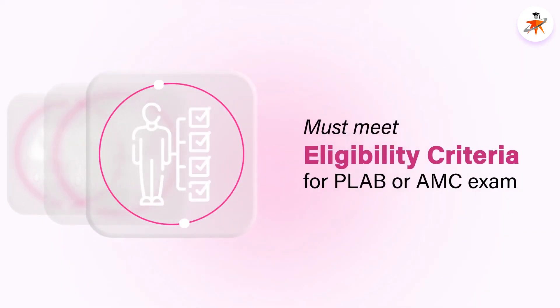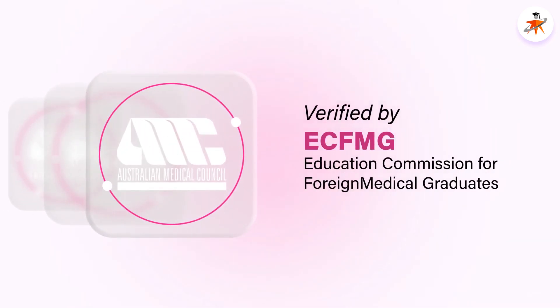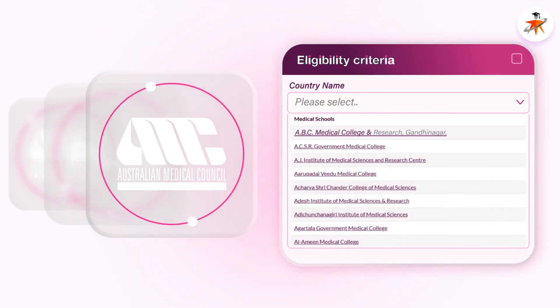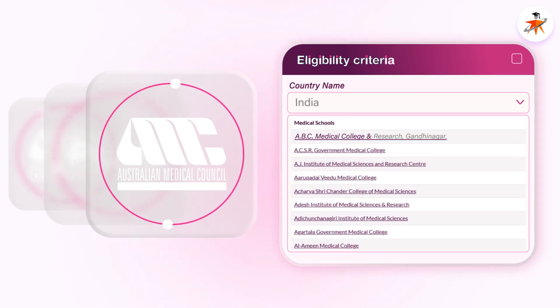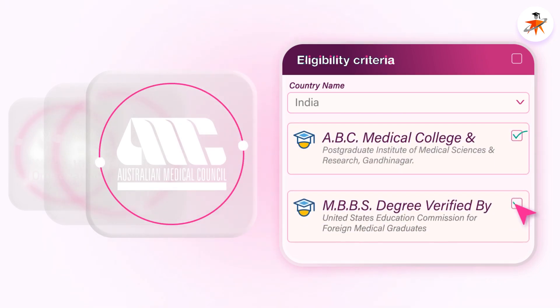Applicants must meet the following eligibility criteria to sit for PLAB or AMC exam. First, for either of the exams, your medical school must be listed in the WHO World Directory of Medical Schools listing. For AMC, your medical degree should also be verified by ECFMG, which is the United States Education Commission for Foreign Medical Graduates. You can check your medical school eligibility by selecting your country and ensuring your medical school's name is available in the recognised institutions list, and also ensure that your degree name is recognised.